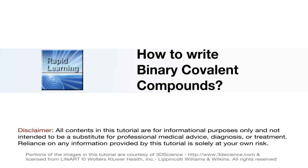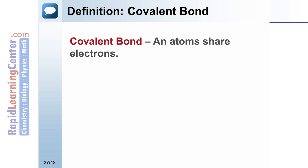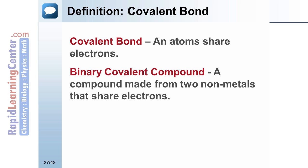The third type is binary covalent. A binary covalent compound is between two non-metals. When non-metals bond together, they don't transfer electrons as in an ionic bond. Rather, they share electrons to form a covalent bond.